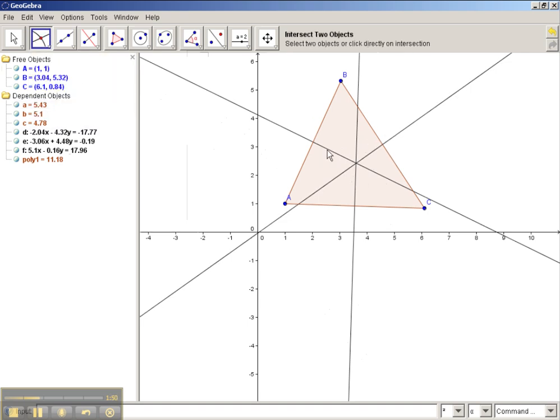And select intersect two objects. So you can select any of the three perpendicular bisectors that you created. And just remember, this intersection point, this concurrency point of these three perpendicular bisectors, is called the circumcenter. So we have our circumcenter D.